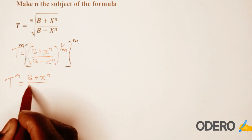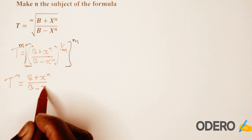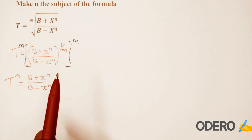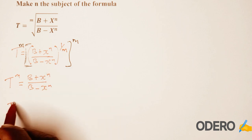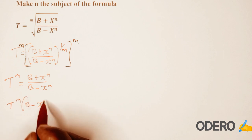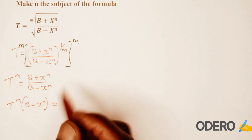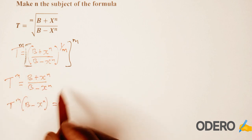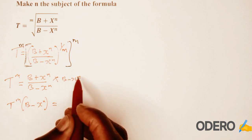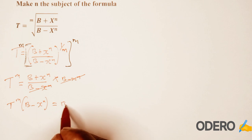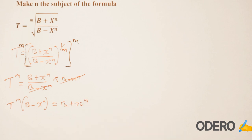Then you multiply both sides by b minus x raised to n. You're going to have t raised to m multiplied by b minus x raised to n is equal to — if you multiply both sides by b minus x raised to n, this one will cancel this side. So you're going to have b plus x raised to n remaining on your right side.